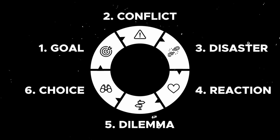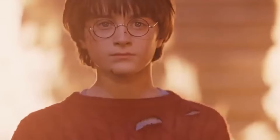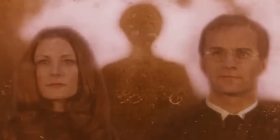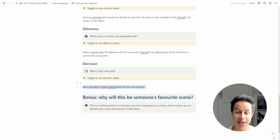One very important thing to understand with scene structure is that this process of action and reaction — goal, conflict, disaster, reaction, dilemma, and decision — is actually circular in nature. Once you've gone through all six steps and the character has made their decision, that loops into a new goal. The decision gives your character a new goal to pursue, and so your story is really made up of a sequence of these looping scene structures all throughout your narrative. To close out our Harry Potter example, the decision Harry makes is to directly engage with Quirrell — he decides to do whatever it takes to stop him and stop Voldemort from getting the stone, even if it costs him his life.